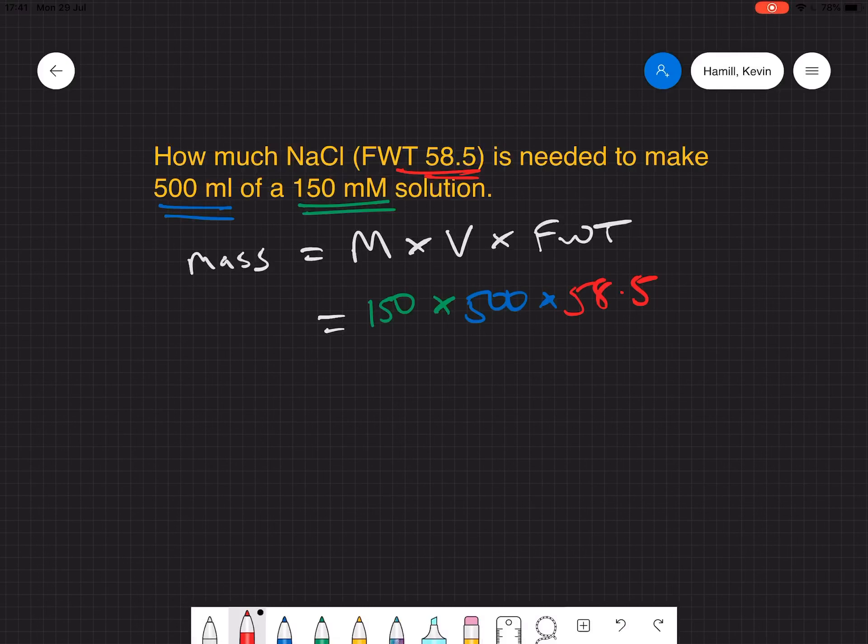Formula weight is given in units of grams per mole per liter, so what we actually have to do is convert our concentration into moles and our volume into liters.